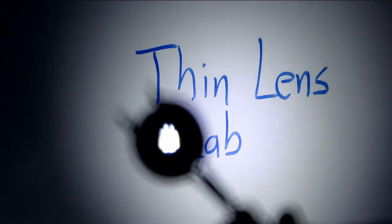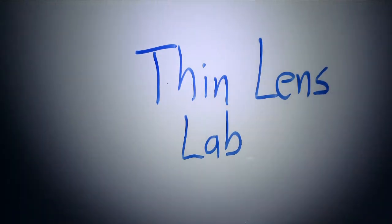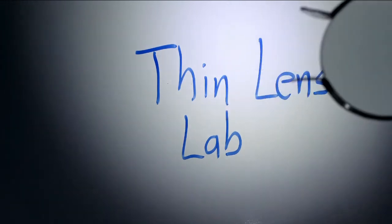Today in the Physics Funhouse we are performing the classic thin lens experiment, where we attempt to measure the focal length of a lens by forming different images with it. In order to do this we must have a converging lens — that is, a lens that is thicker in the middle than it is on the edges. One of the questions you need to be able to answer today is why does it have to be a converging lens. So come with me and let's investigate lenses.